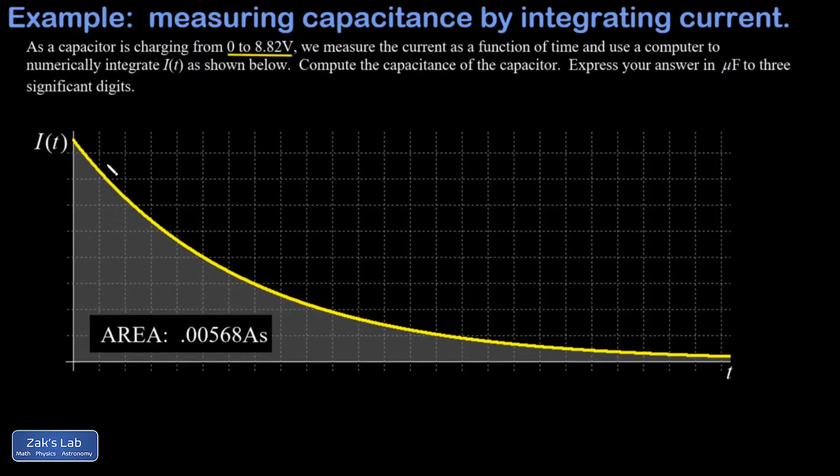There's my current as a function of time graph. This is actually a decaying exponential which is characteristic for an RC circuit as a capacitor charges. The computer spit out that the area under this curve is 0.00568 amp seconds. What's an amp second?